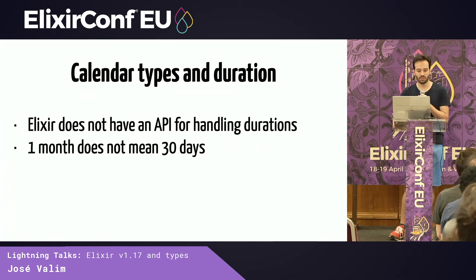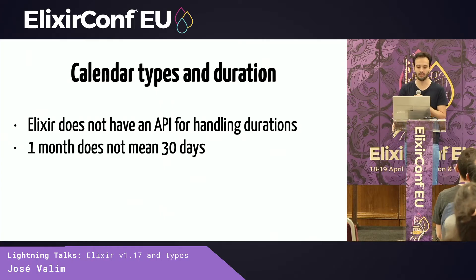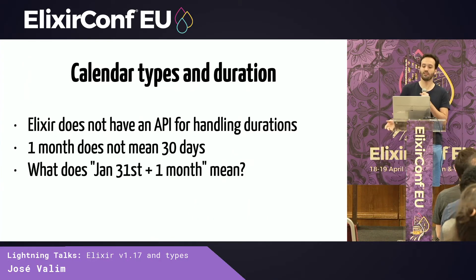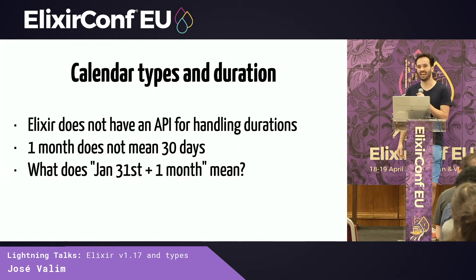The issue is that one month, for example, does not mean 30 days — we cannot assume just that. Some months are going to have 31, 28, or 29 days. So what does it mean, for example, if you do January 31st plus a month? Is that the last day of February?